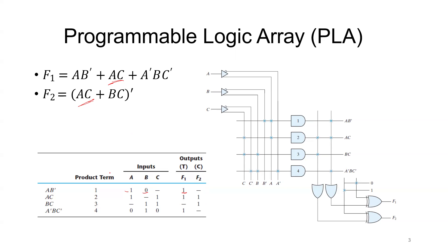To implement the circuit: in a programmable logic array, we have a fixed OR gate and a programmable AND array. Inputs A, B, C are given along with their complements A', B', C' through buffers. For the first product term AB', A and B' are programmed — wherever programmed, the fuses remain intact. The programmable AND array outputs are then fed into the OR gate.